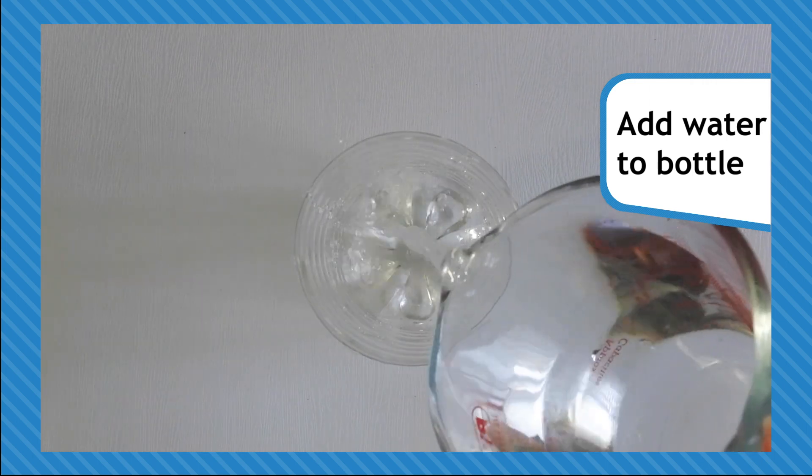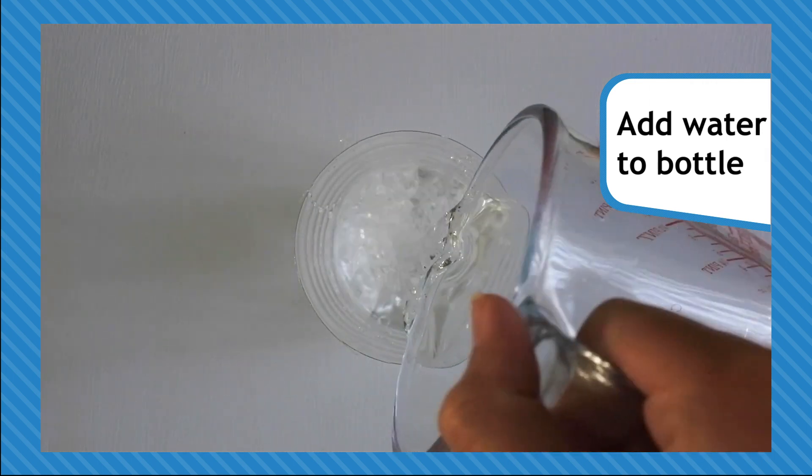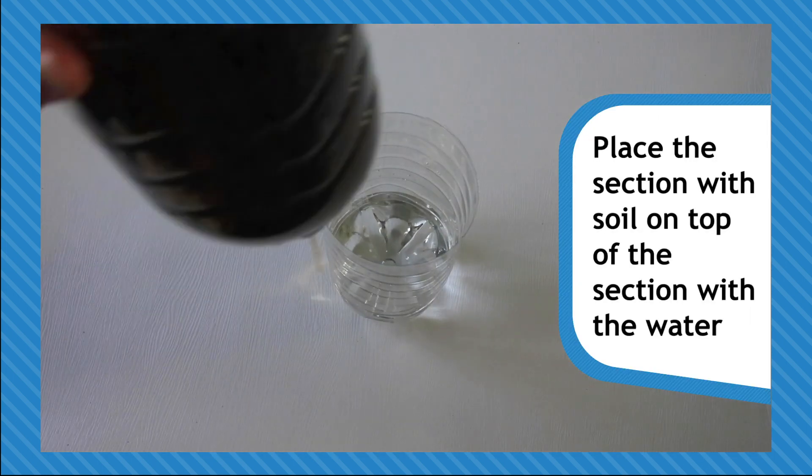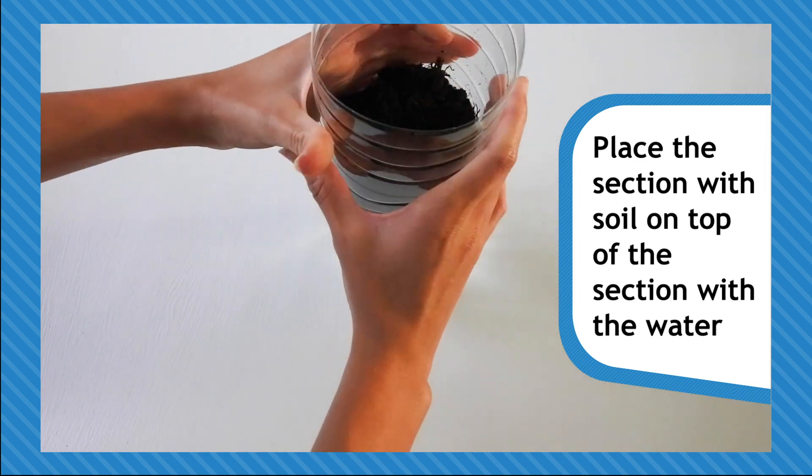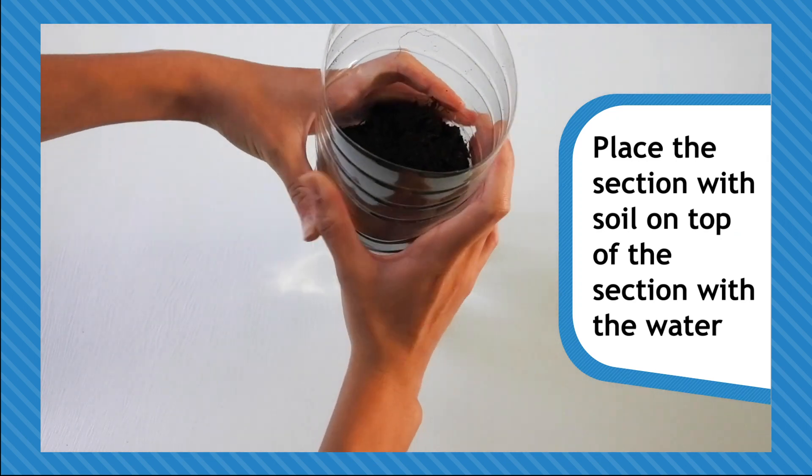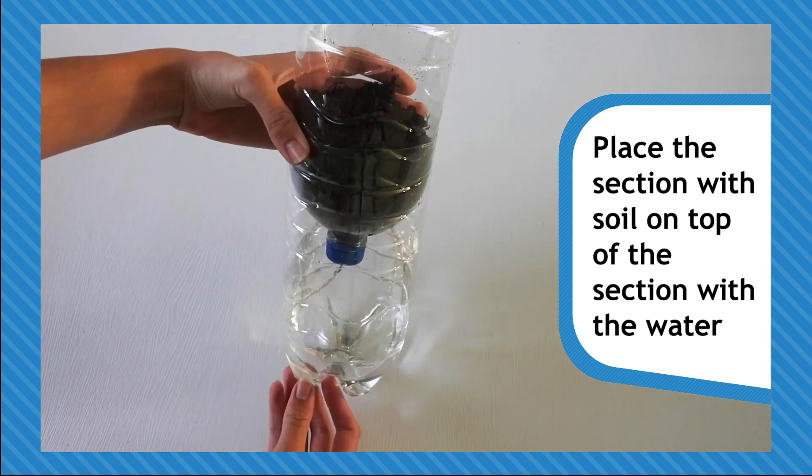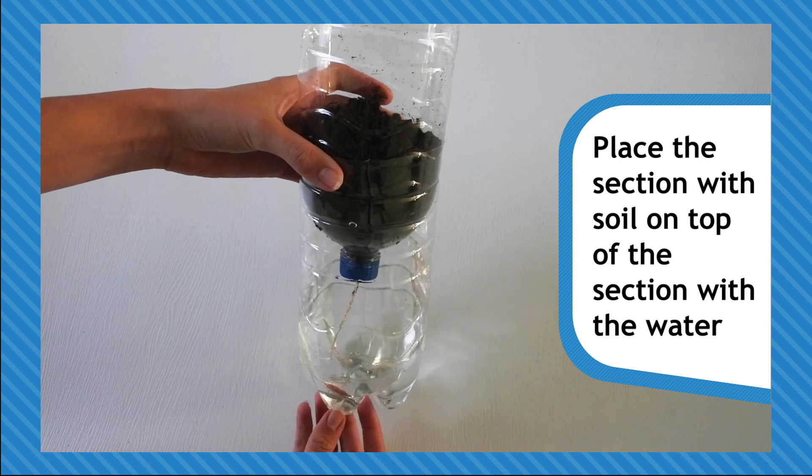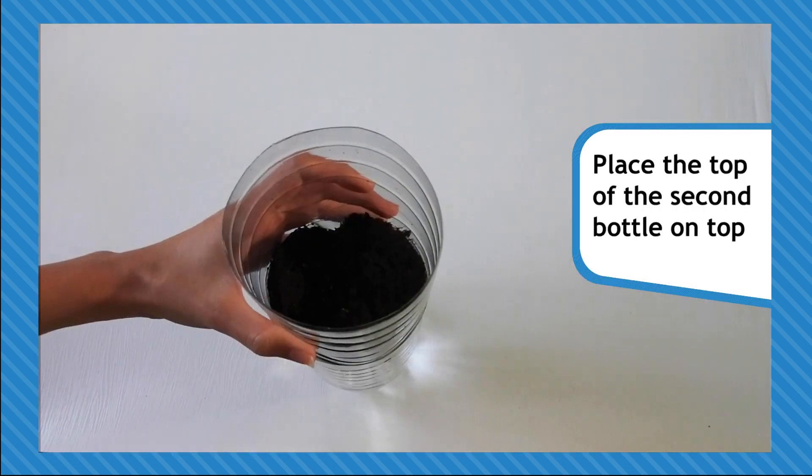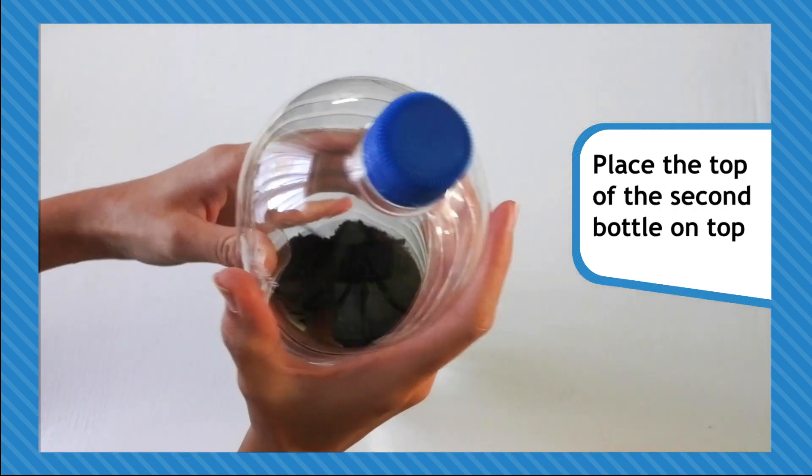Pour some water into the bottom of your second bottle. Finally it's time to start piecing our biosphere together. Start with the section containing water and place the section containing soil over it, with the string dipping into the water. Top up the water if needed. The top of the second bottle should then sit on top.